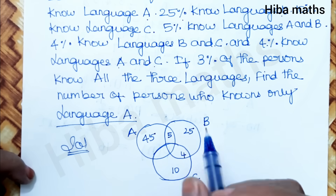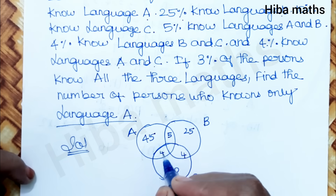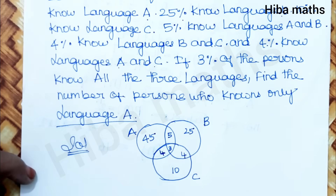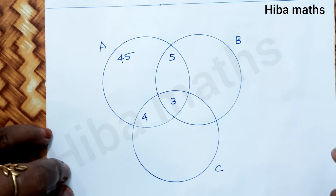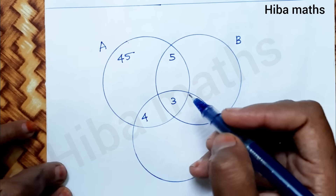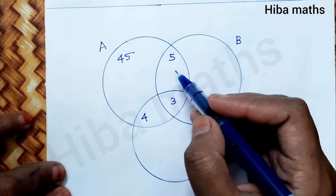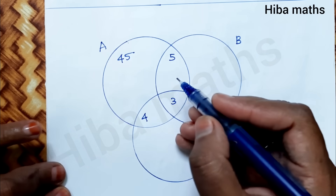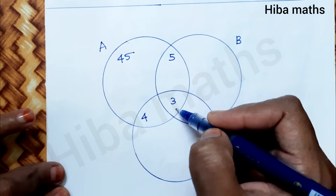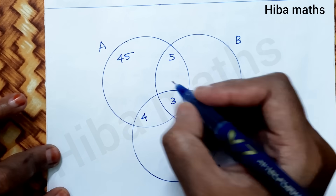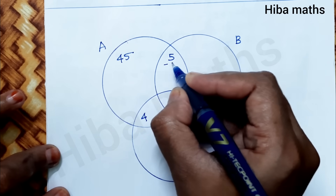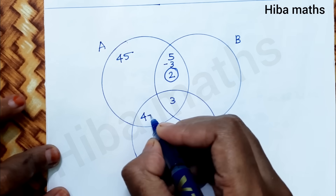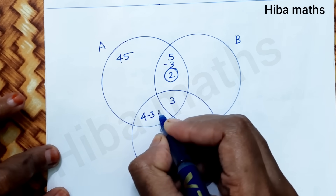A and C is 4% and all three languages is 3%. So A and C only equals A and C minus all three: 4 minus 3 equals 1.